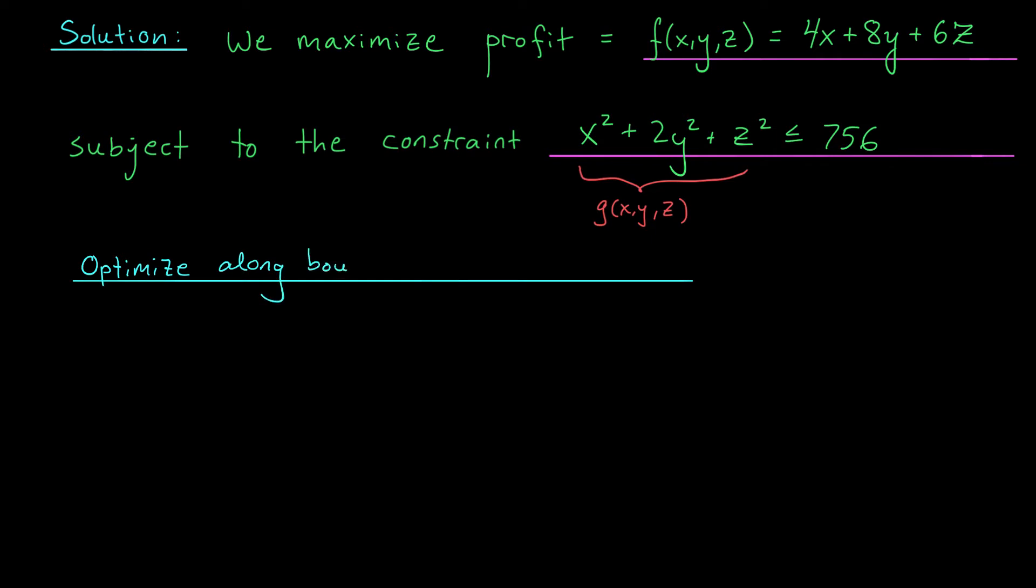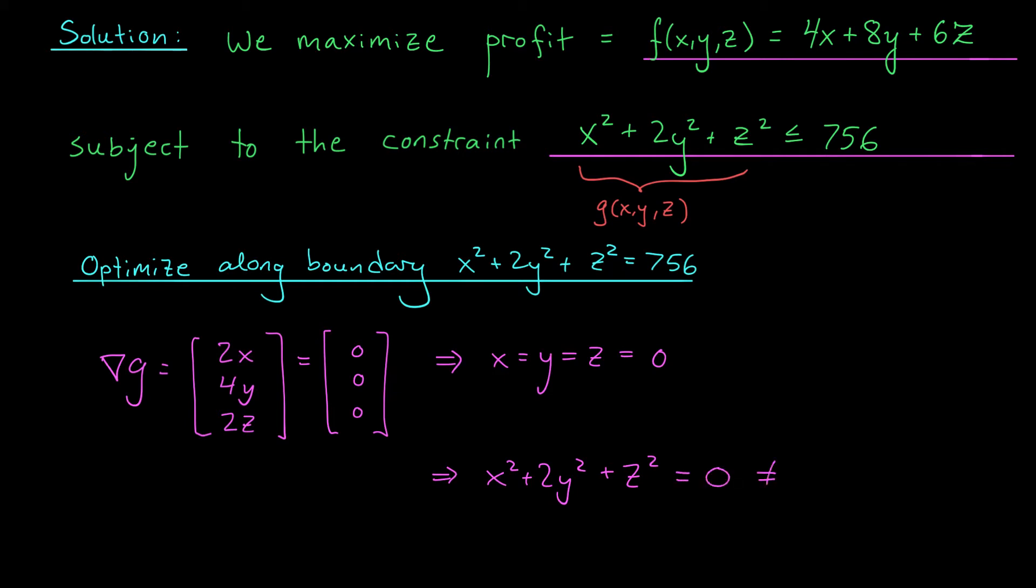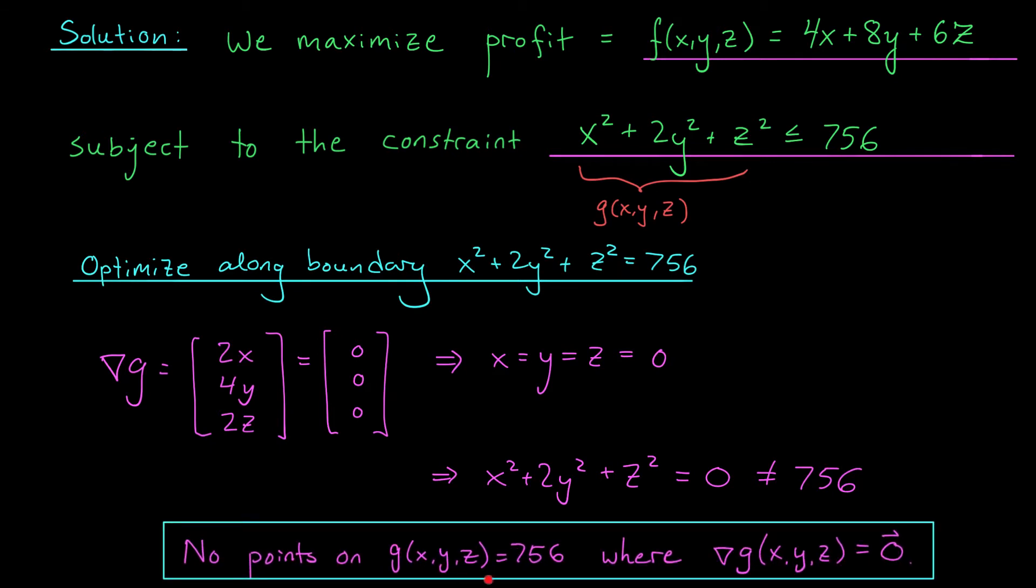So starting with the boundary, we want to maximize f subject to the constraint x squared plus 2y squared plus z squared equals 756. If we're using the method of Lagrange, we first have to make sure that the gradient of g is not zero at any point along this constraint curve. So let's compute the gradient of g. We have that del g is 2x, 4y, 2z. What would it mean for this gradient to be equal to zero? Well, if you look at each line separately, you'll see that x has to be zero, y has to be zero, and z has to be zero. But if that's the case, then the left-hand side of our equation, x squared plus 2y squared plus z squared would evaluate to zero, not 756. So what we conclude is that there are no points on our constraint curve where the gradient of g is equal to zero. We can now move on to step two.